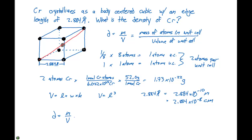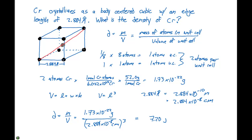Density equals mass divided by volume: 1.73 times 10 to the minus 22 grams divided by (2.884 times 10 to the minus 8 centimeters) cubed, which gives us a density of 7.20 grams per cubic centimeter.